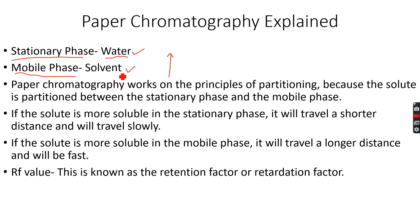The different solutes have different solubilities in the stationary phase and in the mobile phase. For example, something can be more soluble in the stationary phase and less soluble in the mobile phase, while something else can be less soluble in the stationary phase and more soluble in the mobile phase. Every solute has different solubilities in the two phases, and what this results in is basically something called partitioning — the solute is partitioned between the stationary phase, which is water, and the mobile phase.